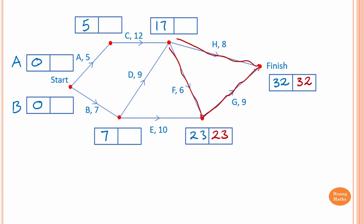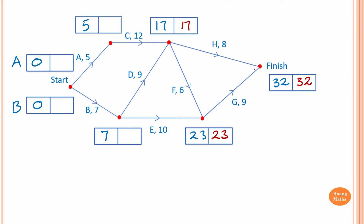Going back to activity C — if we go via H, we compute 32 minus 8, which is 24. We also have the path via F: 23 minus 6 is 17. The smallest value is 17, so we take 17. Coming back to activity A, we go 17 minus 12, which is 5.